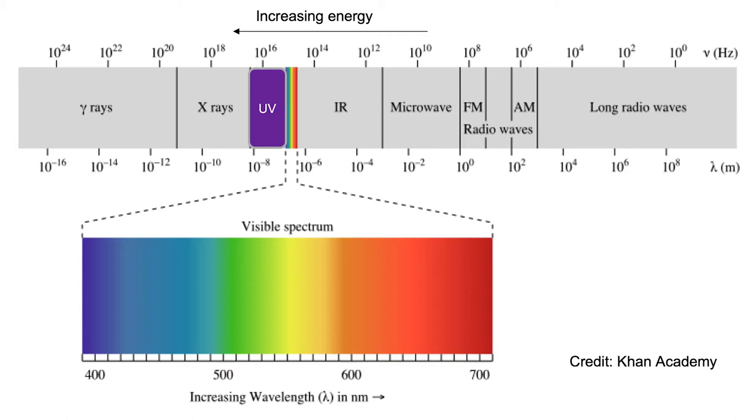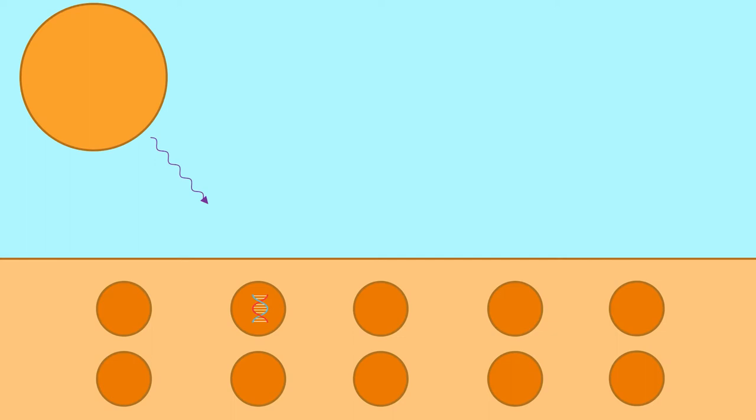UV light is a range of light, slightly more energetic than visible light. This extra energy allows UV light to enter our skin and damage the DNA in our skin cells, which can lead to sunburn and cancer.